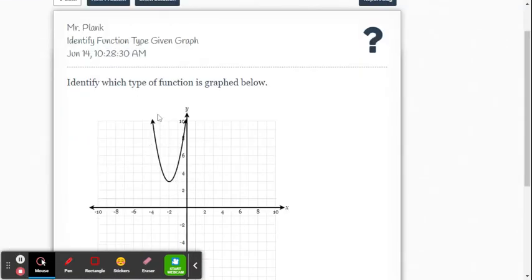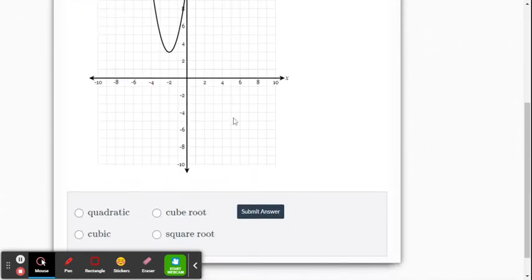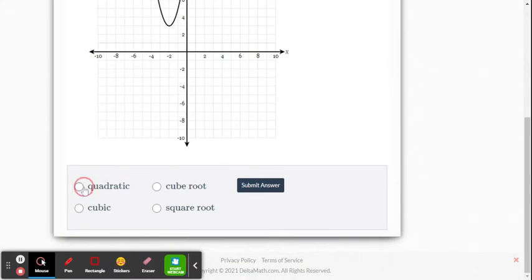Our next example is a U-shape curve. We call that a parabola. That represents a quadratic function. So we come down here and hit quadratic.